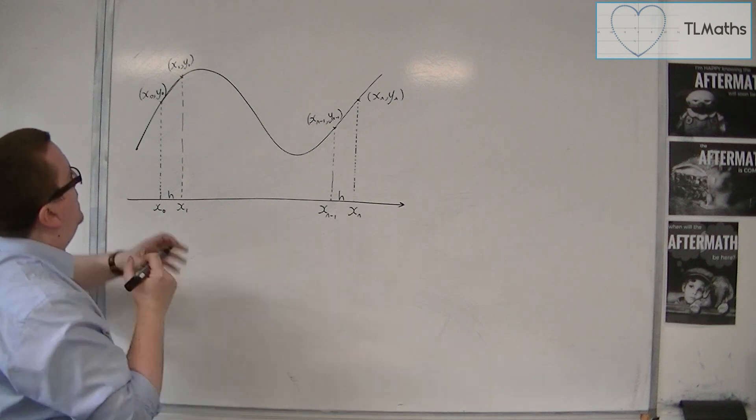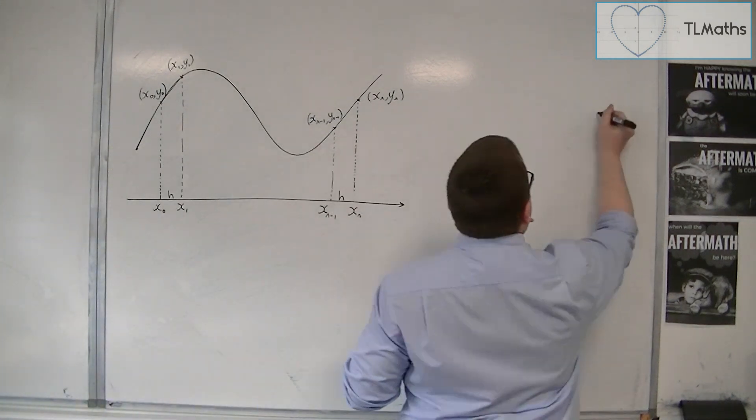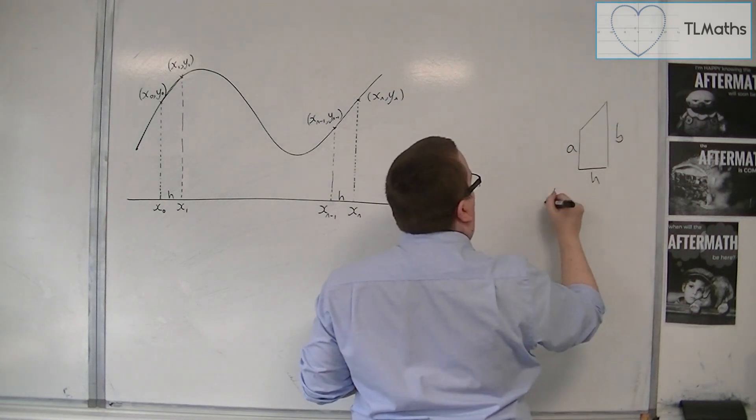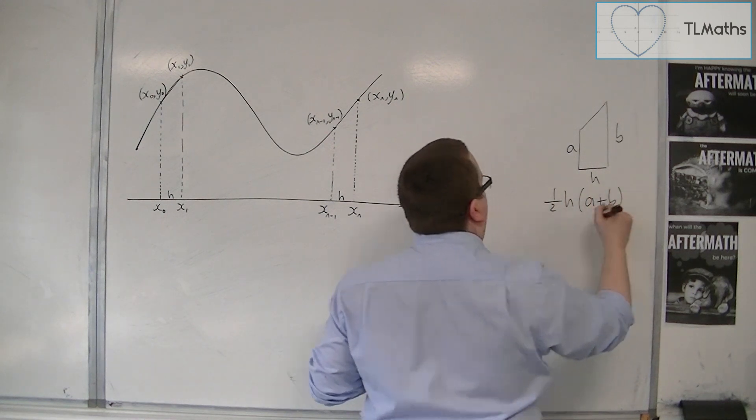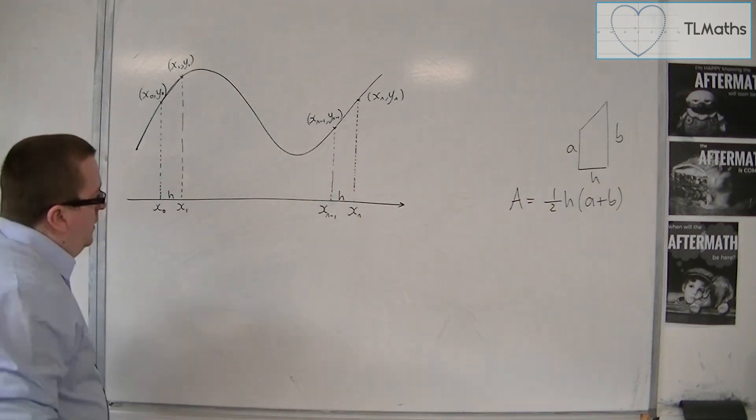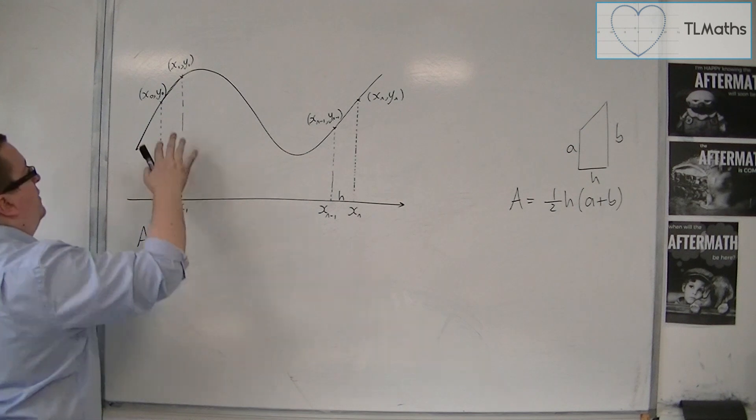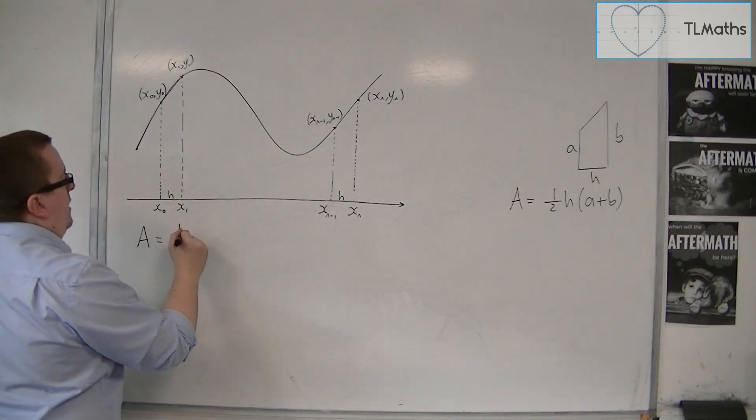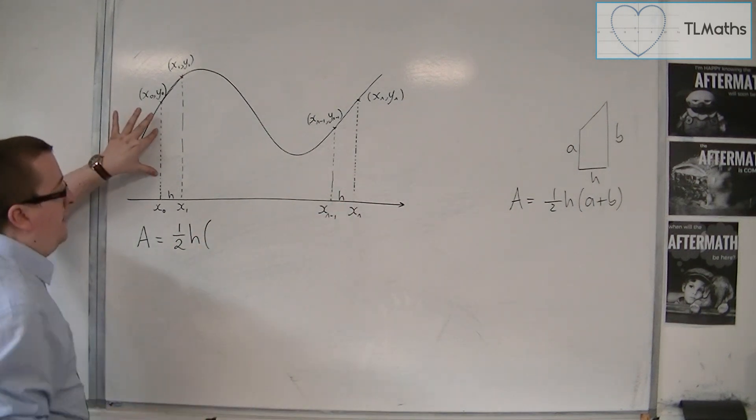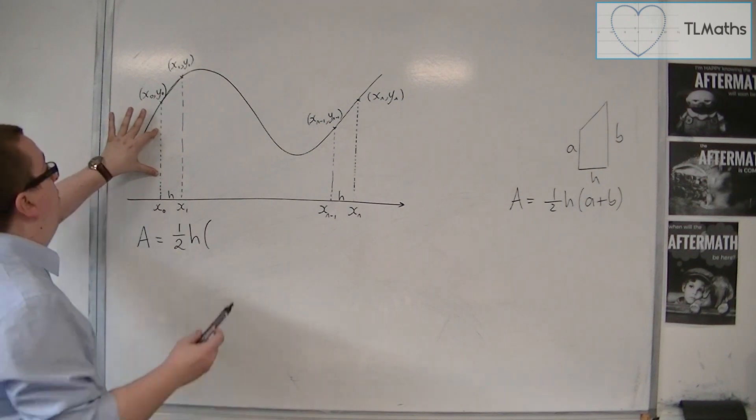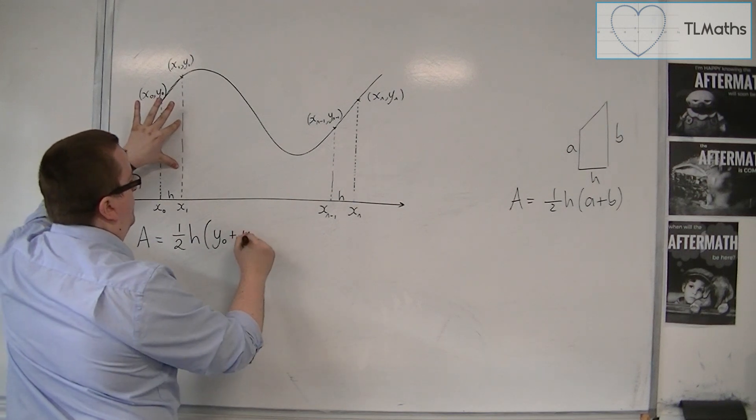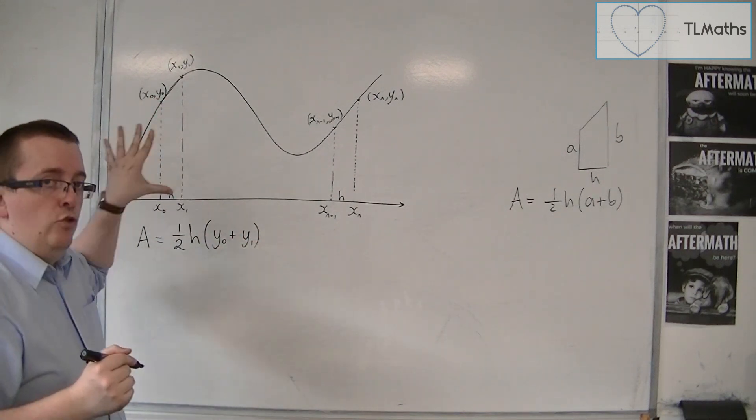So the area of a trapezium, if we remember back to the previous video, is given like this. So it's 1 half h a plus b. So that would be the area of that trapezium. So I would have the area of this first trapezium to be 1 half times h times a plus b. So a is the height, the left-hand height of that trapezium, so that's y0, plus the height of that length, so y1. So that's the area of that trapezium.